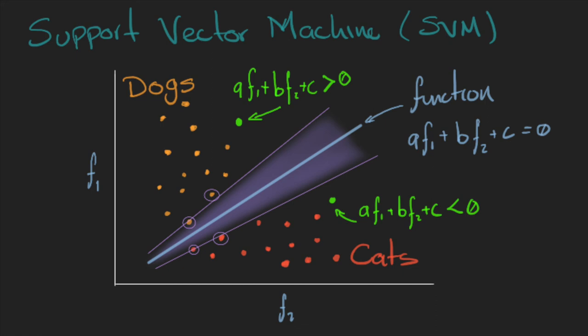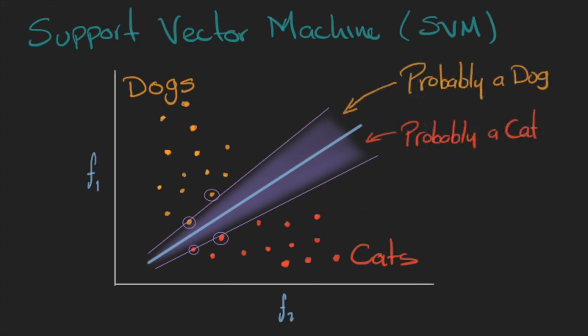We can also use the area between the support vectors to say that anything that is positive in the margin is probably a dog, and everything that is negative in the margin is probably a cat. But it's not for sure.